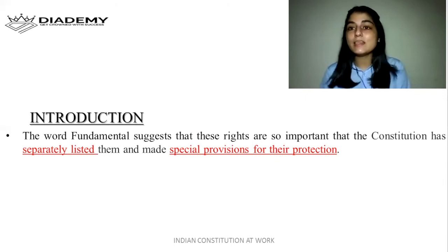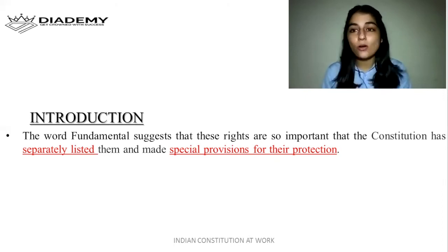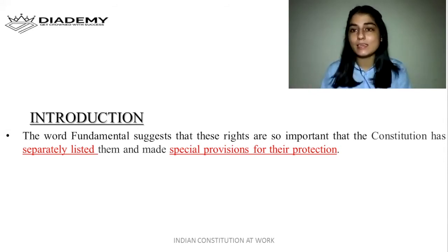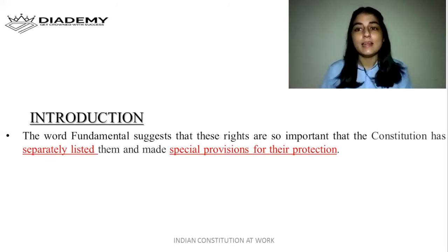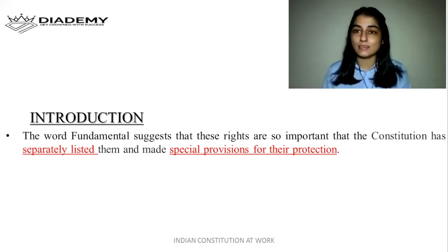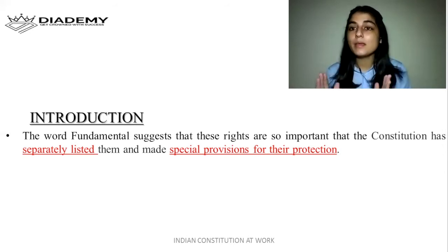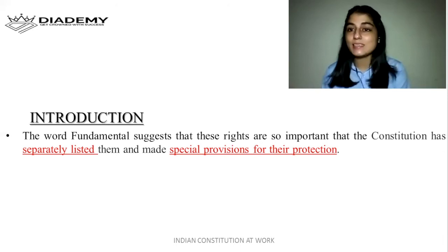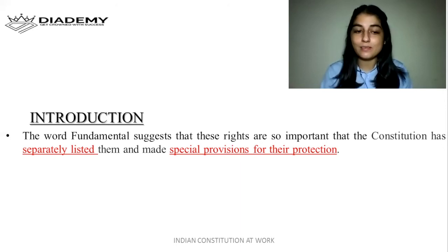Whereas if we see the other ordinary rights — for example, right to property — it is an ordinary legal right. The legislature takes care of everything related to that right. The legislature makes provisions and can amend this right as and when required. But in the case of fundamental rights, these cannot be amended by the legislature. That is why we call these rights as fundamental rights.